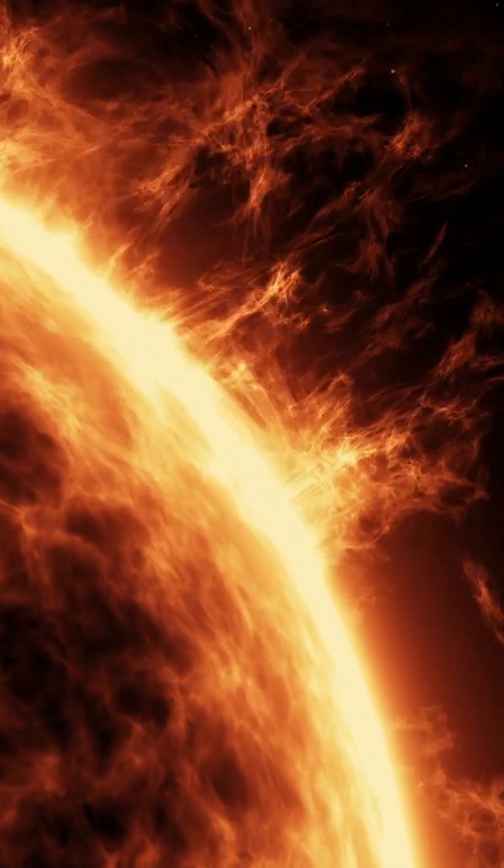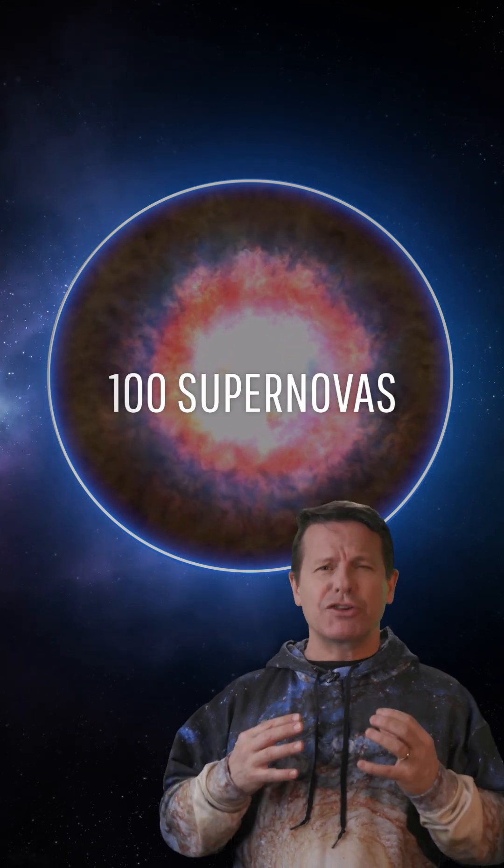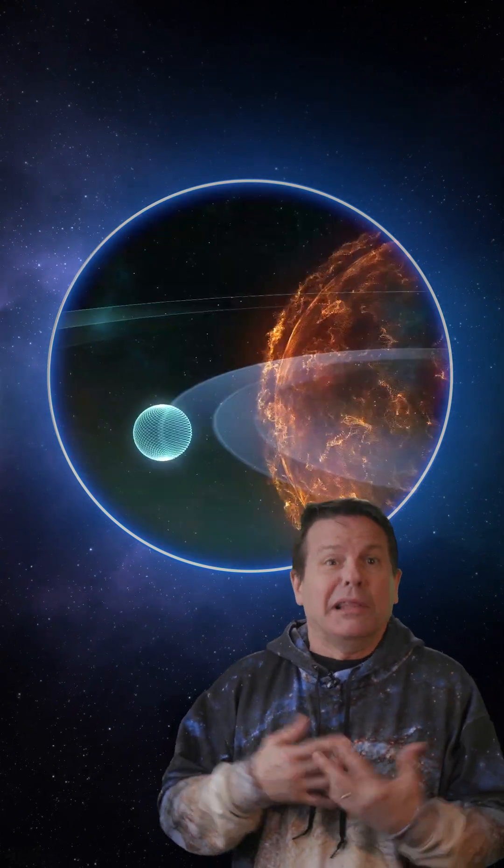UY Scuti is also 40 times closer to death than our Sun. When it dies, it's expected to explode with the force of more than 100 supernovas, and will obliterate everything nearby.